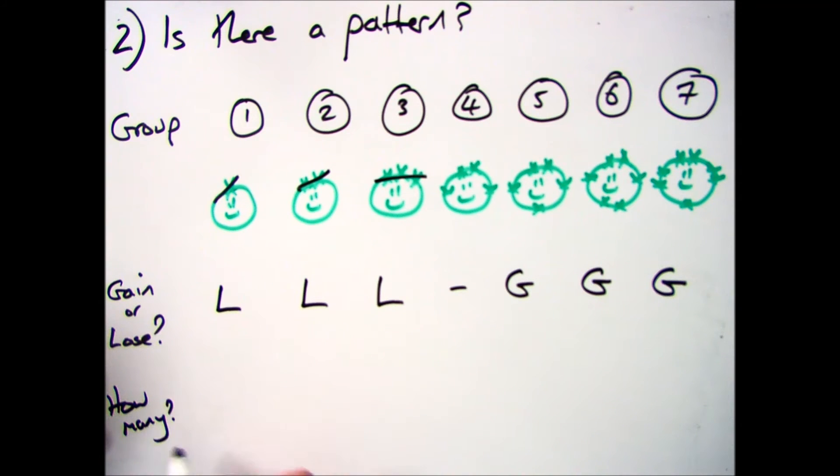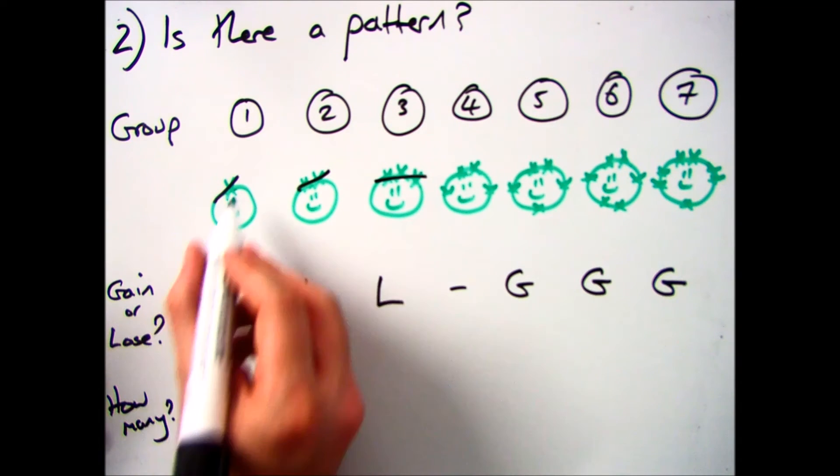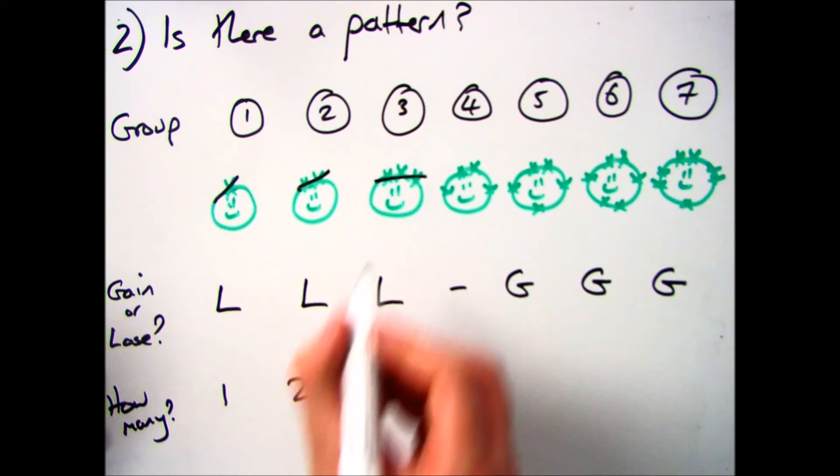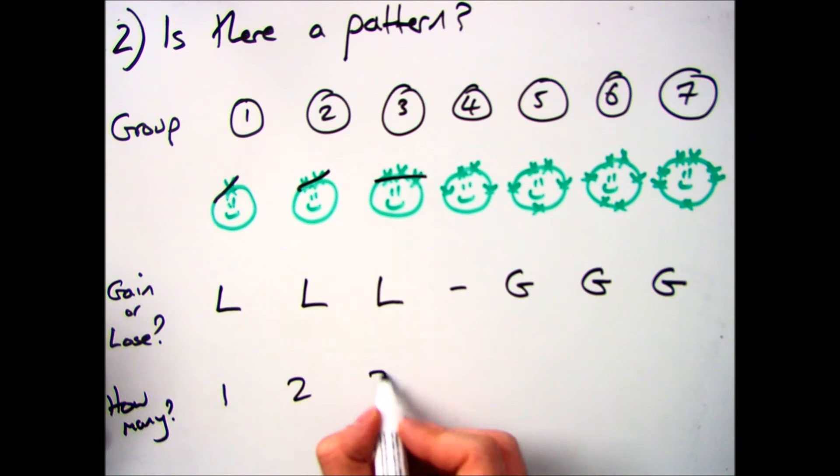So groups 1, 2 and 3 all want to lose them. Group 1, it's easier to lose 1. Group 2 with 2 in the outer shell loses 2. And group 3 with 3 in the outer shell loses 3.